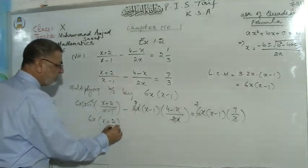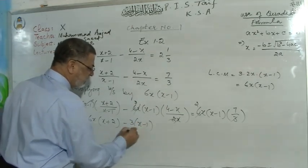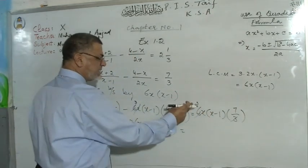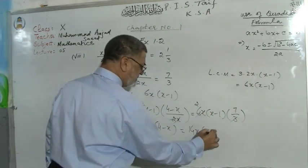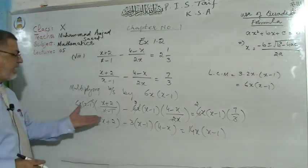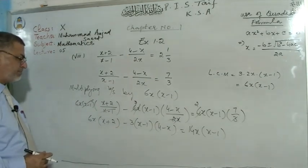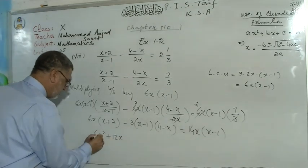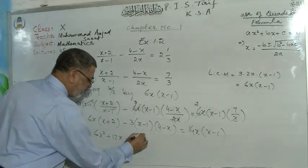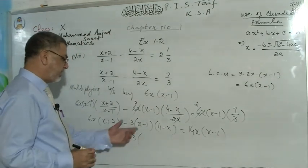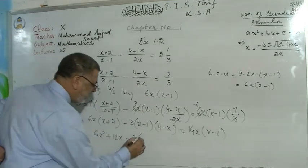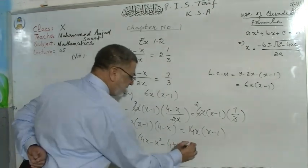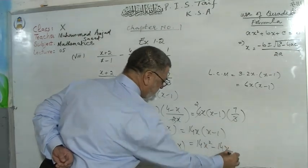We are left with 6x(x+2) minus 3(x−1)(4−x) equals 14x(x−1). Now you have the equation without fractions. Now you will multiply: 6x² + 12x minus 3 times the bracket — multiply these brackets and you get 4x − x² − 4 + x.